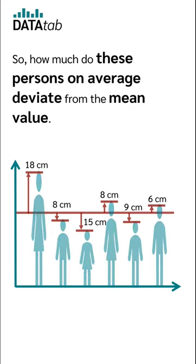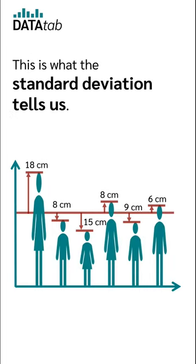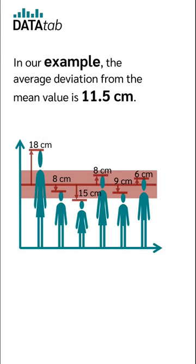So how much do these persons on average deviate from the mean value? This is what the standard deviation tells us. In our example, the average deviation from the mean value is 11.5 centimeters.